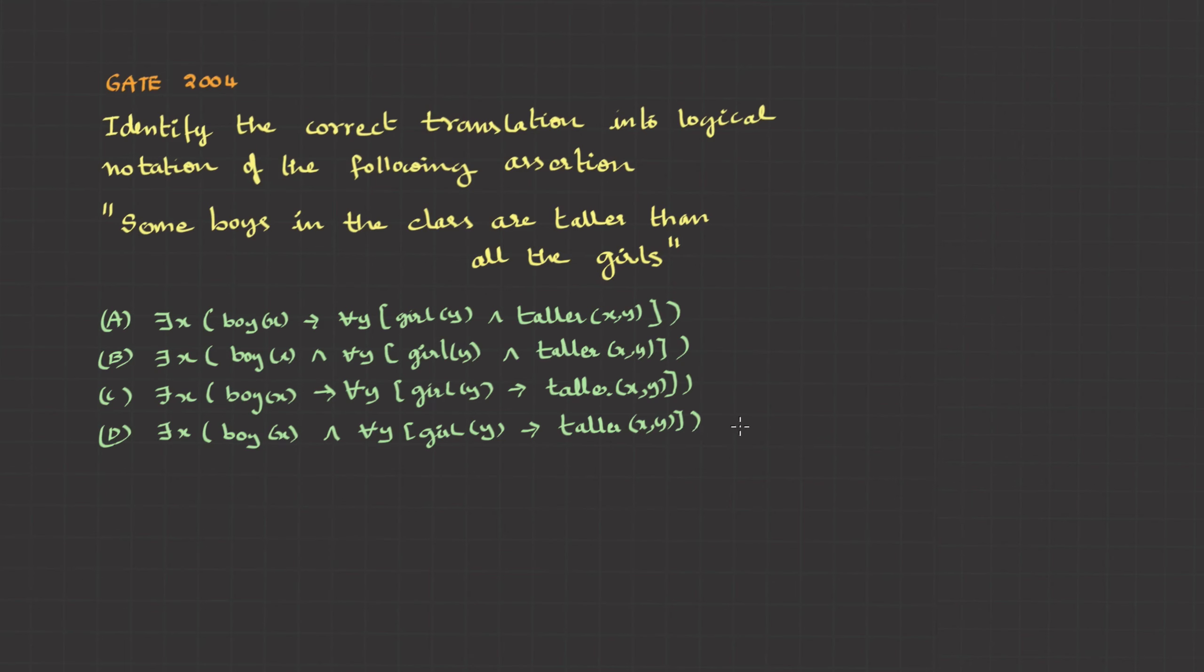Here is an example. This is a question asked in GATE 2004. Identify the correct translation into logical notation of the following assertion: Some boys in the class are taller than all the girls. Some boys, so boys should be attached with existential quantifier and conjunction operator. And all girls, so girls should be tagged with implication. Combining both, we can make out only option D is appropriate.